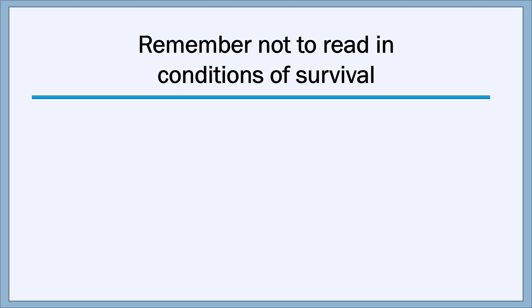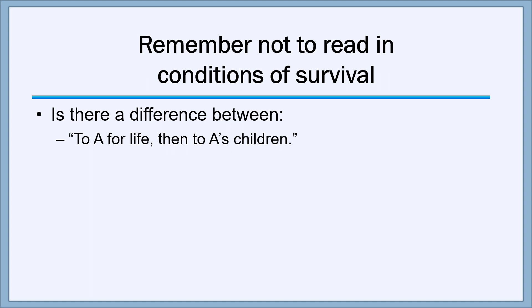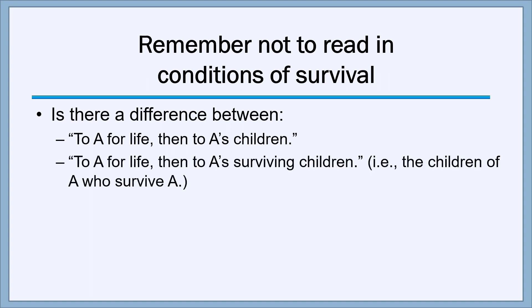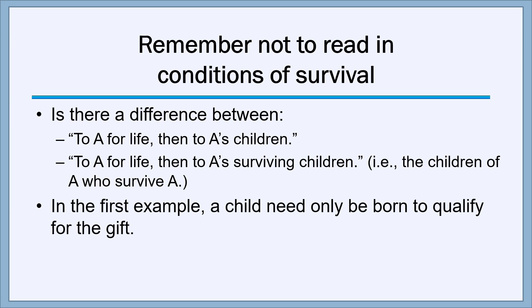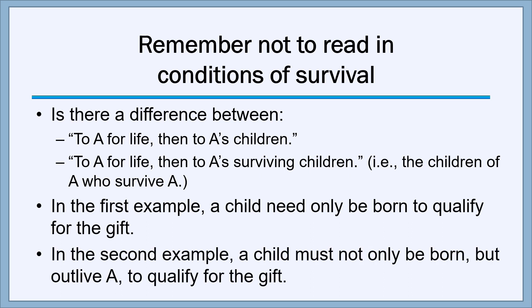Remember not to read conditions of survival into a class gift if there are none there. Is there a difference between 'to A for life, then to A's children' and 'to A for life, then to A's surviving children'? In the first example, a child only needs to be born to A in order to qualify for the gift. In the second example, the child not only has to be born but has to outlive A. There's a huge difference between the two, even though there's only one tiny word separating them — the word 'surviving.' Do not read in a condition of survival if the grantor didn't express one.